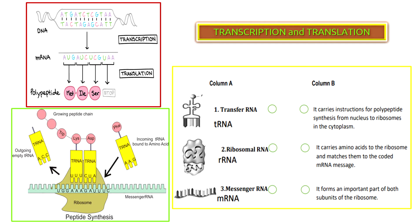In the next activity, please analyze the figure shown on the screen and identify the role of the three RNA types by connecting the circles in column A with those in column B. For transfer RNA, it carries amino acids to the ribosome and matches them to the coded mRNA message. For ribosomal RNA, it forms an important part of both the large and smaller subunits of the ribosome. For messenger RNA, it carries instructions for polypeptide synthesis from the nucleus to the ribosomes in the cytoplasm.